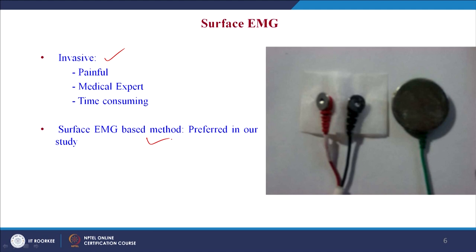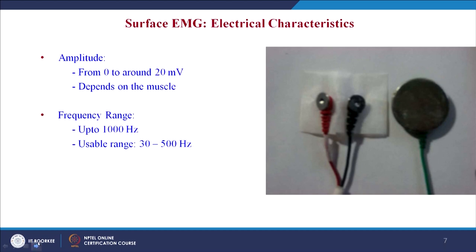The limitations of the surface EMG method are: it varies from subject to subject; second, even for the same subject, depending on his mood the signal gets varied; and third, there is high nonlinearity compared to the invasive approach. The electrodes consist of plus, minus, and a ground electrode. The amplitude range is from 0 to around 20 millivolts, the frequency range is up to 1000 Hz, and the usable range is between 30 to 500 Hz.